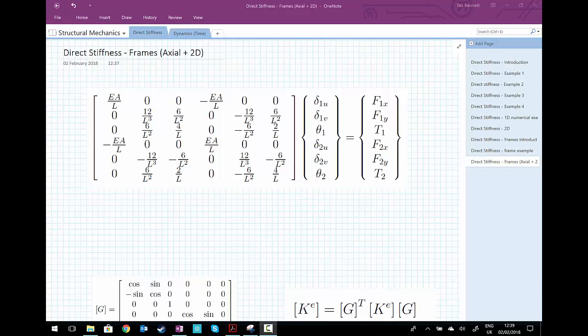We're going to conclude this section on the direct stiffness method and in particular the use of frames or beam elements by looking at how we could incorporate axial forces along the axes of the bar and how similar to what we did with bars.